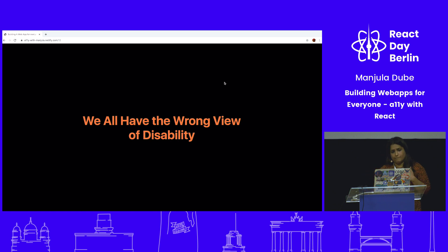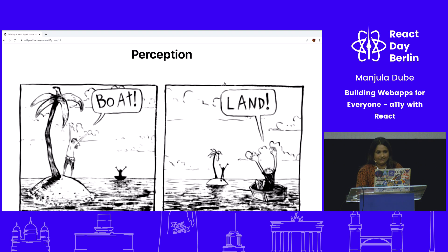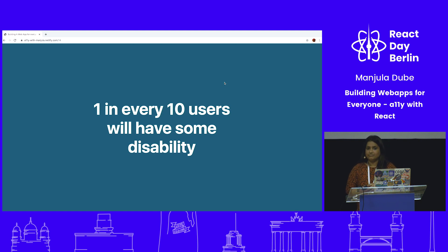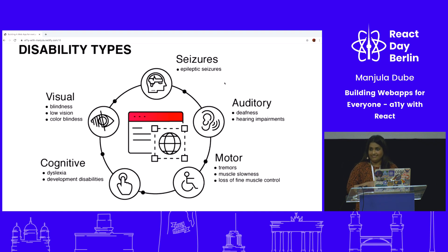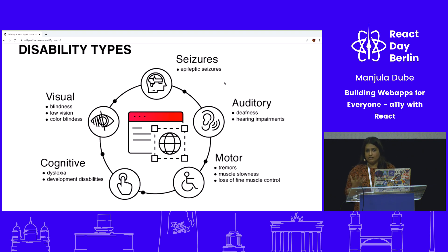We have a very wrong view of disability. When I started doing accessibility work, for me it was just blind users — but it's beyond that. One in every ten users has some kind of disability. Your users can have visual impairment, motor and physical impairment, or cognitive learning disabilities. You need to serve all of these users.